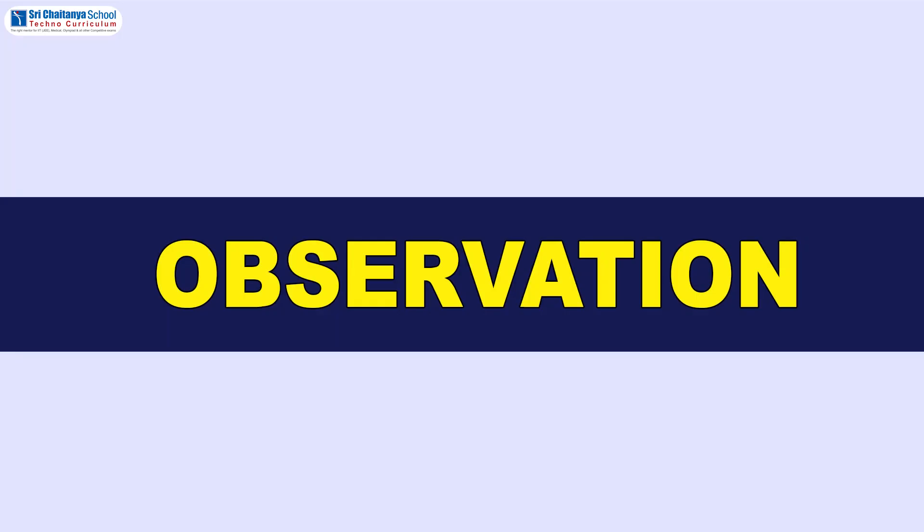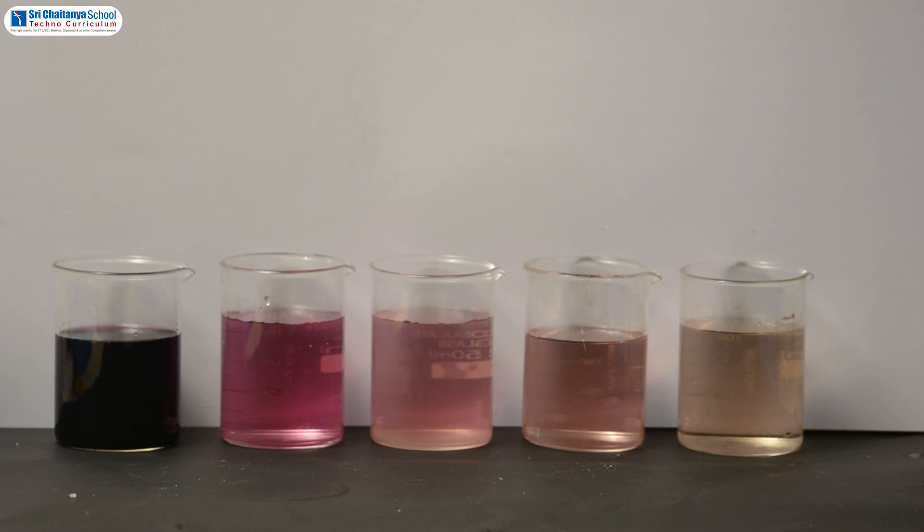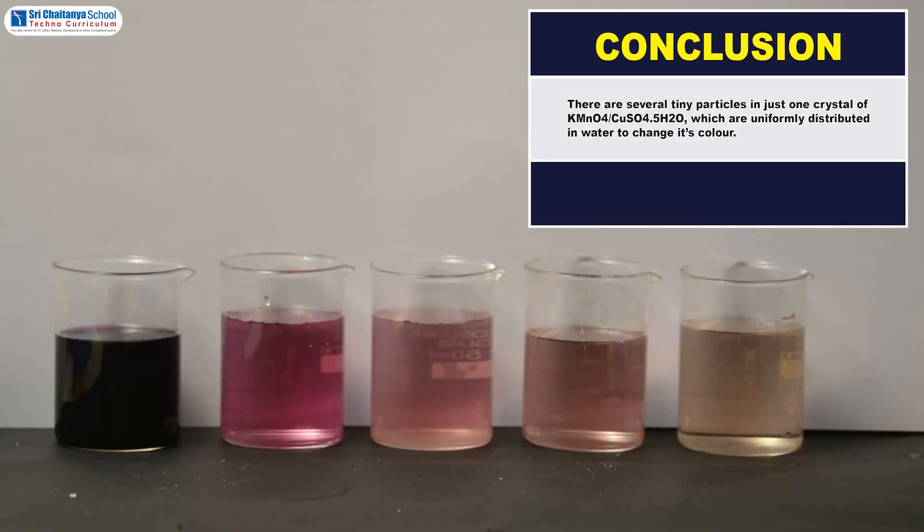What did you observe my dear children? The observation is there is a change in intensity of color of the solution. And the final conclusion is there are several tiny particles in just one crystal of potassium permanganate which are uniformly distributed in water to change its color.